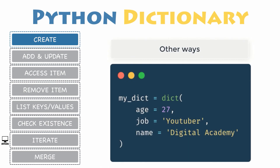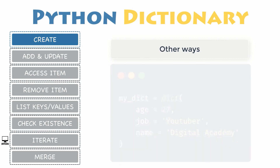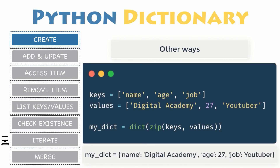There are lots of other ways to create a dictionary. You can convert two-value sequences into a dictionary using the built-in function dict(). The first item inside each sequence is used as the key and the second as the value. You can also use the dict() function along with the zip() function to combine separate lists of keys and values obtained dynamically at runtime.